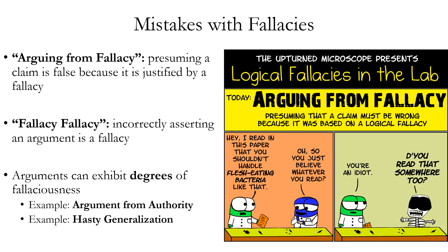Another example of this is the fallacy of hasty generalization. This fallacy argues that a generalization must be true based on too few examples. However, the more examples that you add to the argument, the more it can be strengthened, as long as you don't have any reason to suspect those additional examples are going to be biased — i.e., not representative of the general group you're theorizing about. So a hasty generalization fallacy can be turned into a strong argument by adding more or better examples.